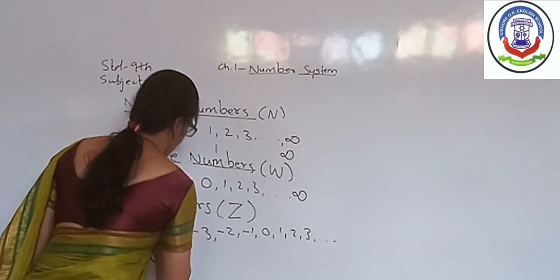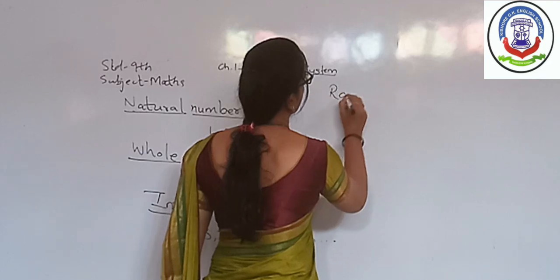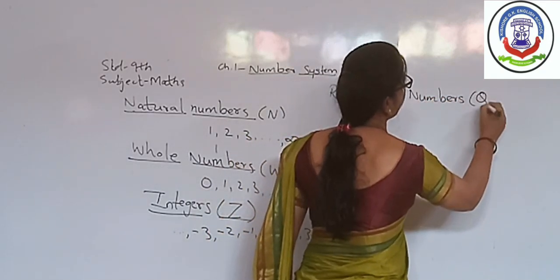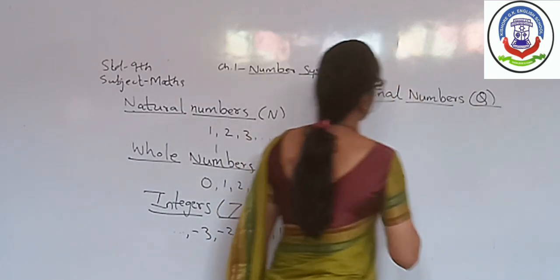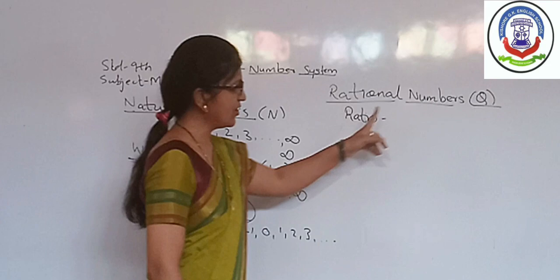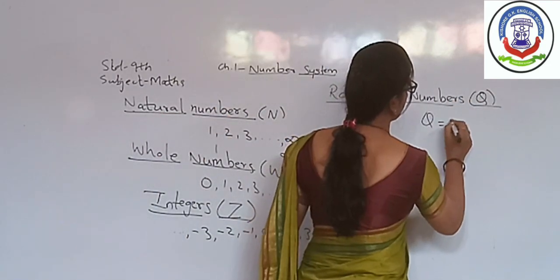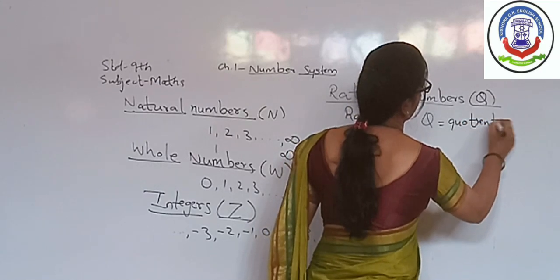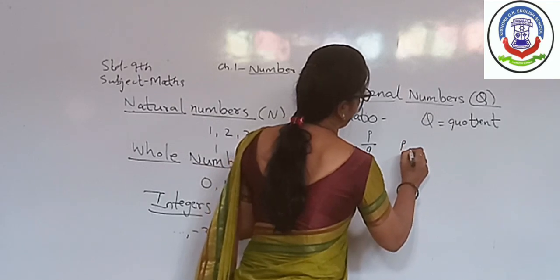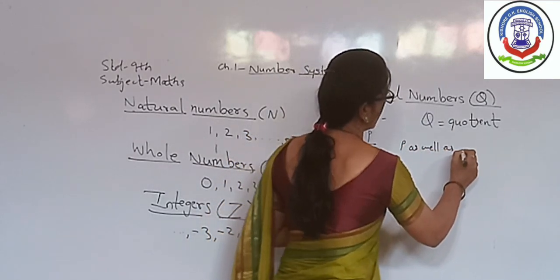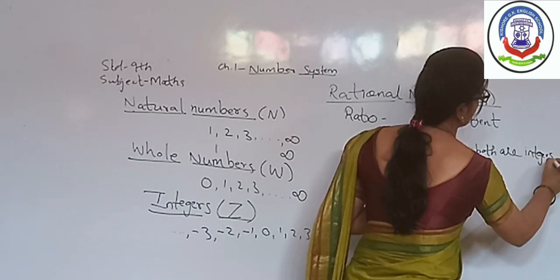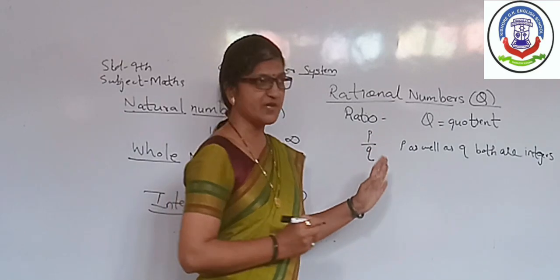Next number is Rational Number. The symbol which is used to represent rational number is Q. The word rational is derived from ratio. R stands for ratio, and this symbol Q is derived from quotient. The rational numbers are numbers which can be represented in the form P by Q, where P as well as Q both are integers.